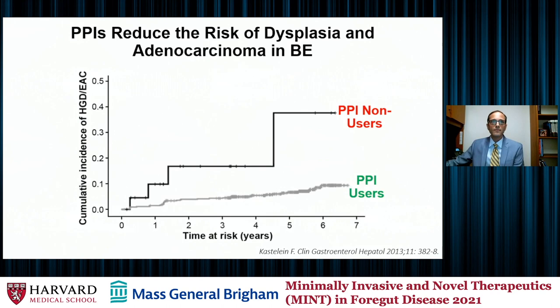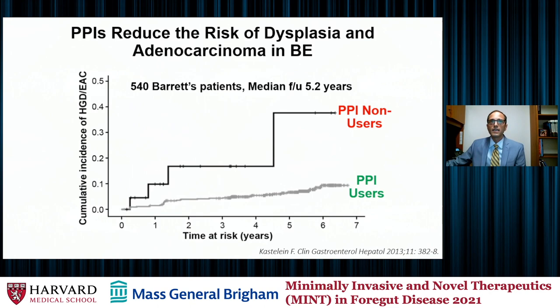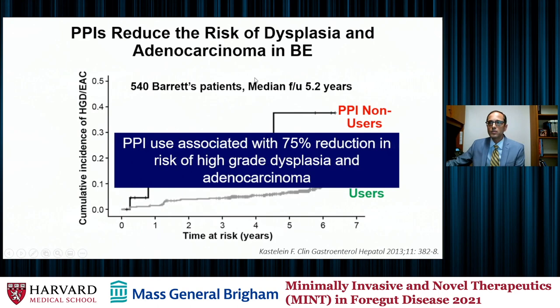Here are some data from a prospective cohort study demonstrating that acid suppression with PPIs reduces the risk of neoplastic progression in Barrett's patients. This prospective observational study involved 540 patients with at least 2 centimeters of intestinal metaplasia, with histology showing low-grade dysplasia in 14% or no dysplasia in 86%, followed for a median of 5.2 years. The cumulative incidence of high-grade dysplasia and cancer was lower in the PPI user group. Overall, PPI use was associated with a 75% reduction in the risk of neoplastic progression in patients with Barrett's esophagus.